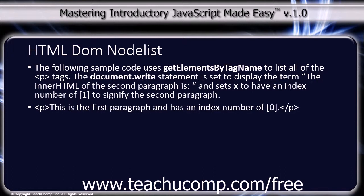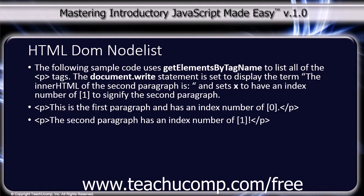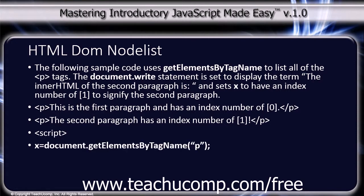The HTML starts with a paragraph tag containing 'This is the first paragraph and has an index number of 0,' followed by the closing paragraph tag. Then an opening paragraph tag containing 'The second paragraph has an index number of 1!' and the closing paragraph tag. Then the script tags.